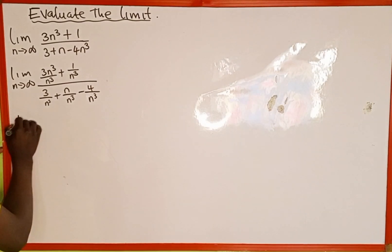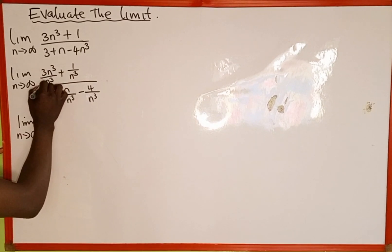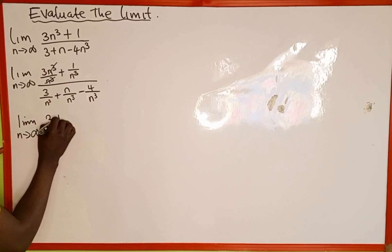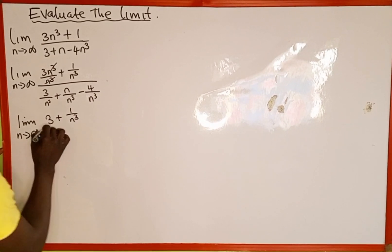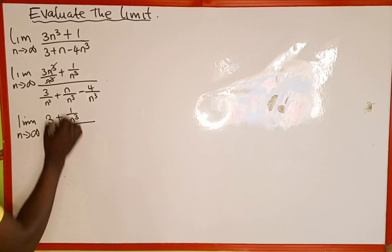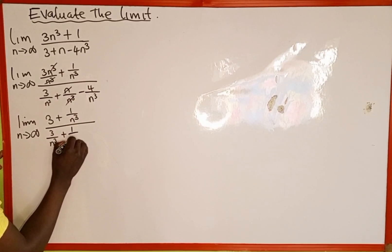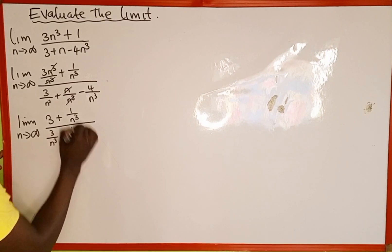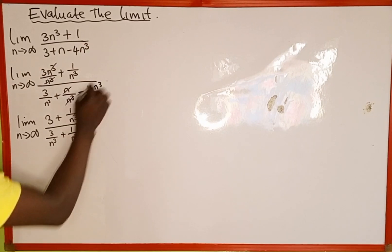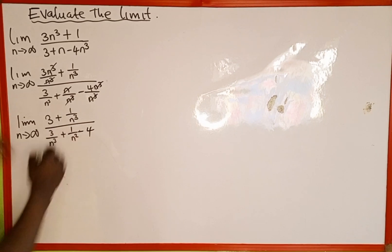Now we're going to simplify. Limit as n approaches positive infinity: n³ divided by n³ cancels, leaving us with 3. Similarly, the n³ terms simplify, and we're left with minus 4.